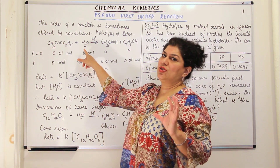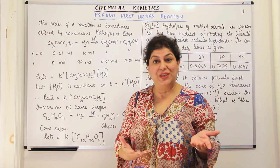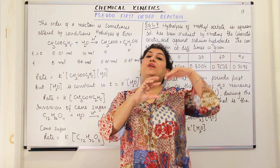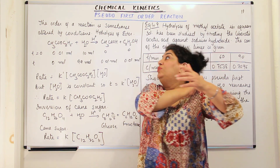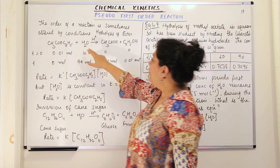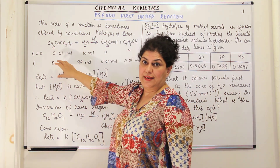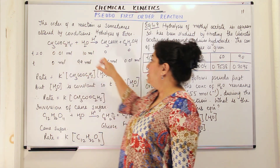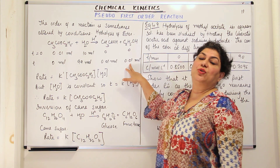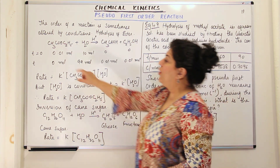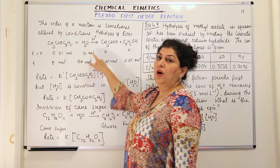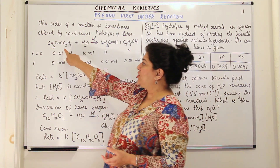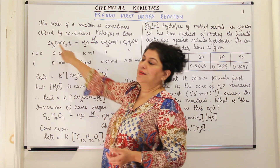We say that water does not affect the rate, therefore it is not contributing towards the order of the reaction. The order of the reaction is based on the concentrations of reactants and to which powers they should be raised to show how they are affecting the rate. When all of the ethyl acetate has been used up, you get 0.01 mole of acetic acid and 0.01 mole of ethanol. The rate only depends on the concentration of ethyl acetate and not on water, so it appears to be a first order reaction.